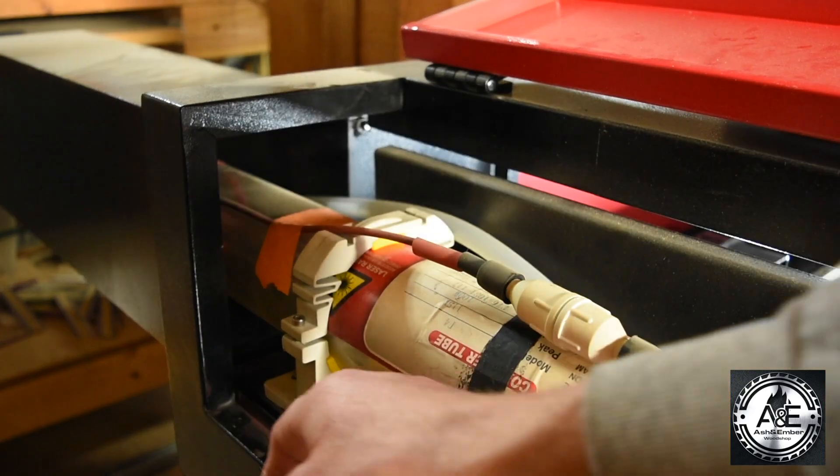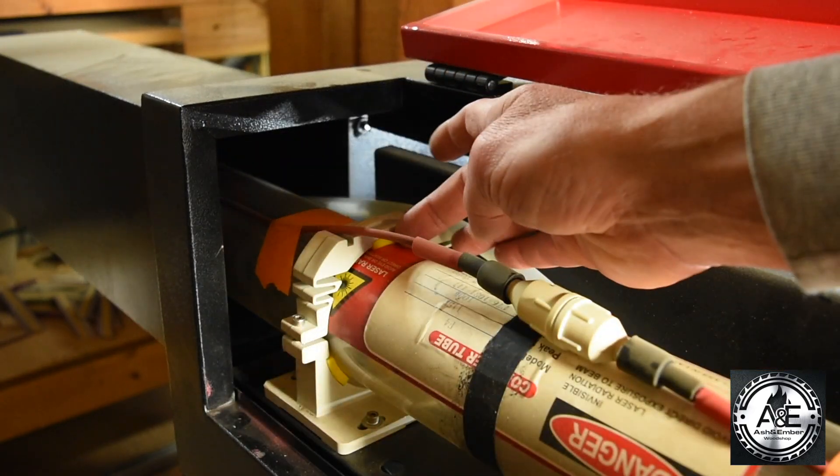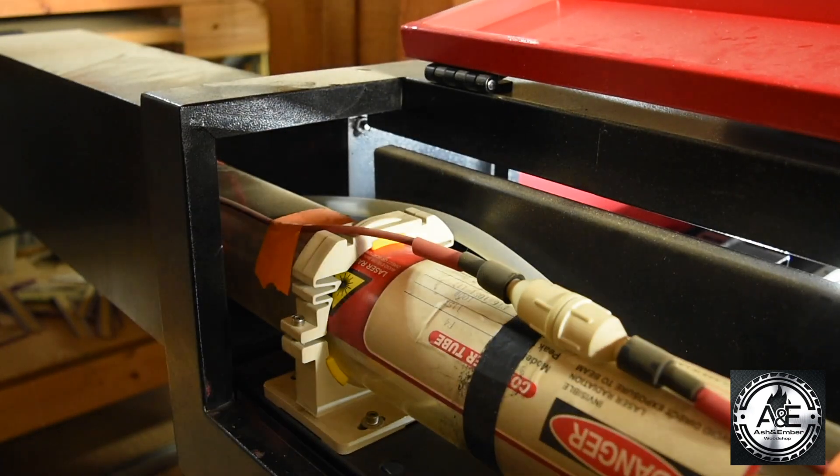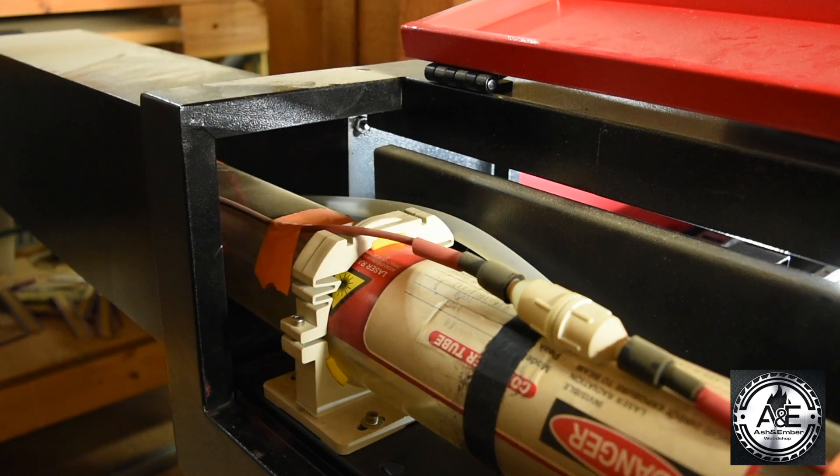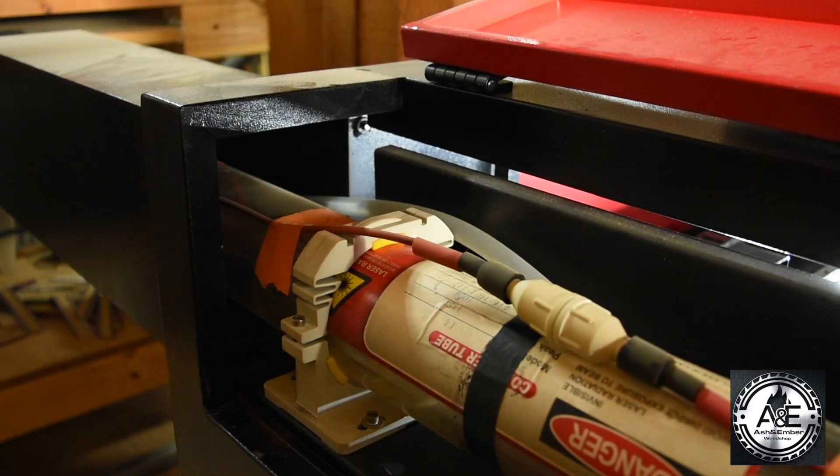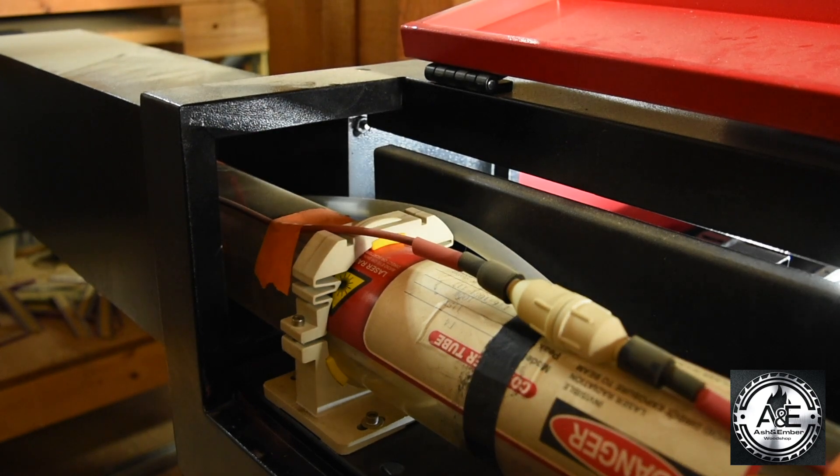So once you have your laser in here, you'll see that it has these little yellow cushions for your laser tube. You're going to sit your tube in there. You're going to make sure that those brackets go around your tube and it is sitting in an even area all the way around. You're not having pressure on one side or another and that your tube is relatively level inside the bracket.